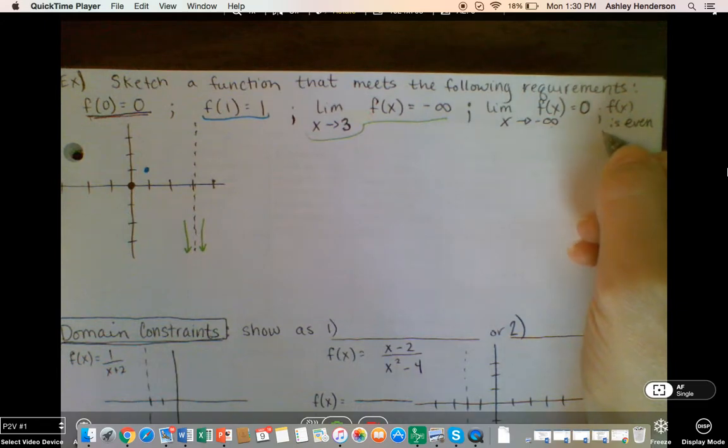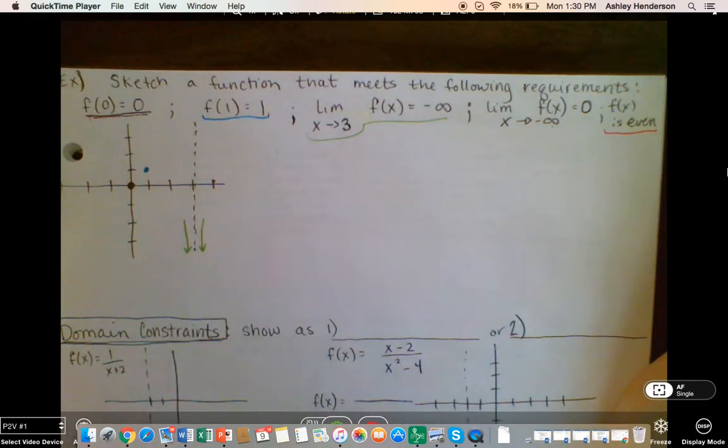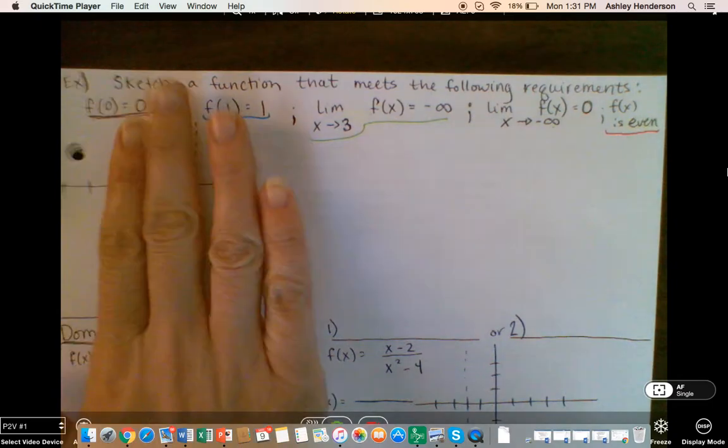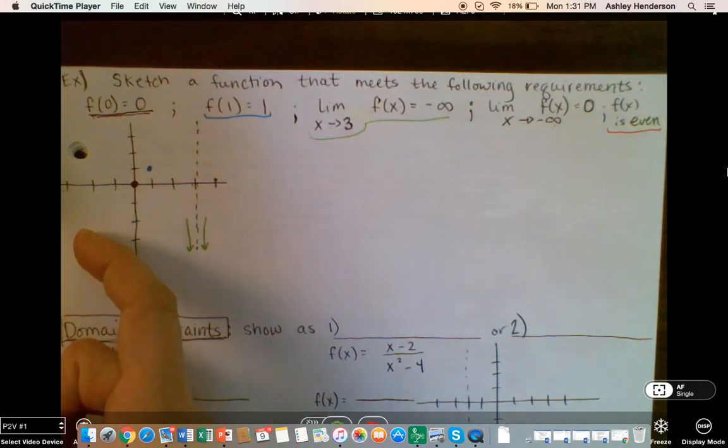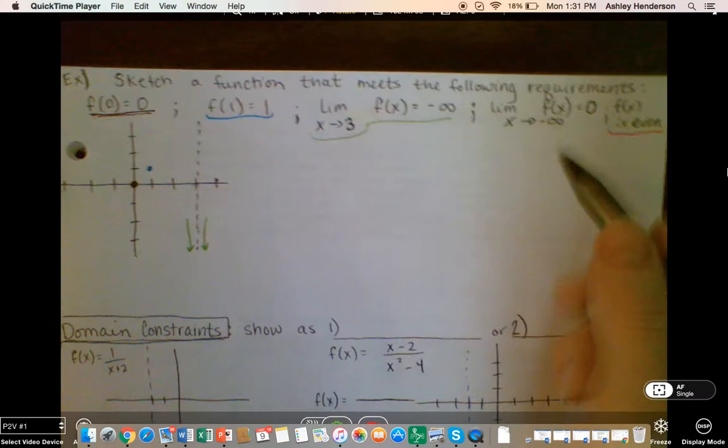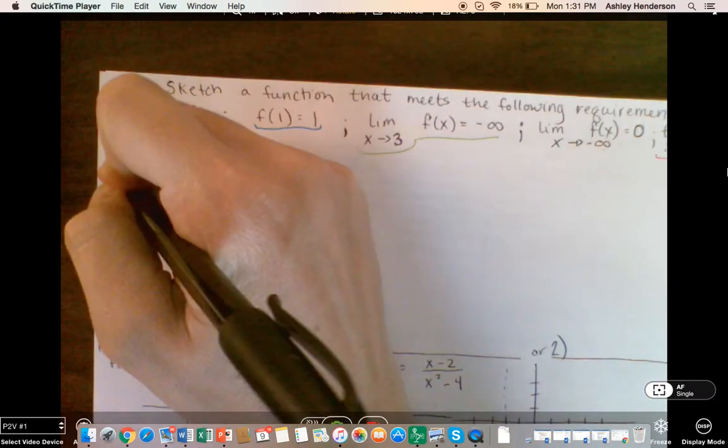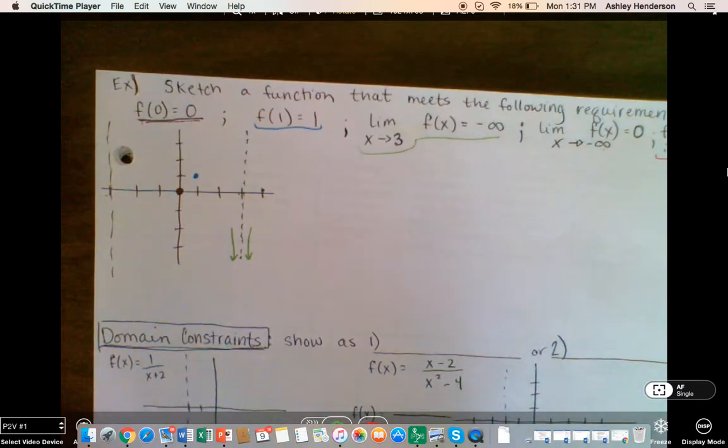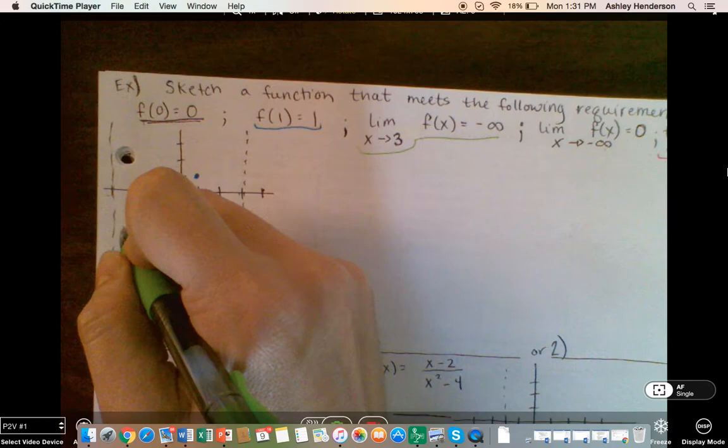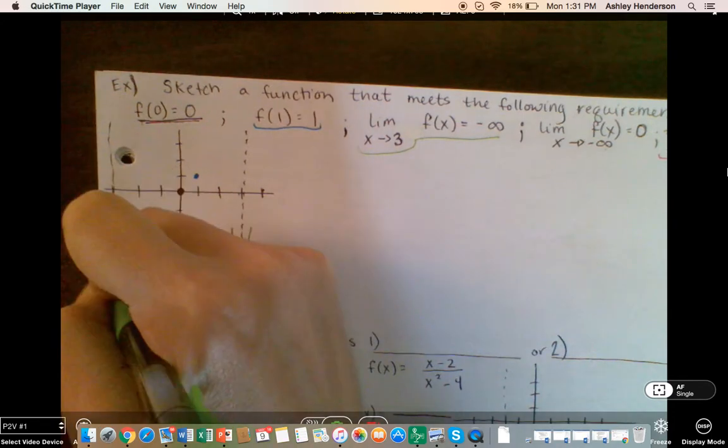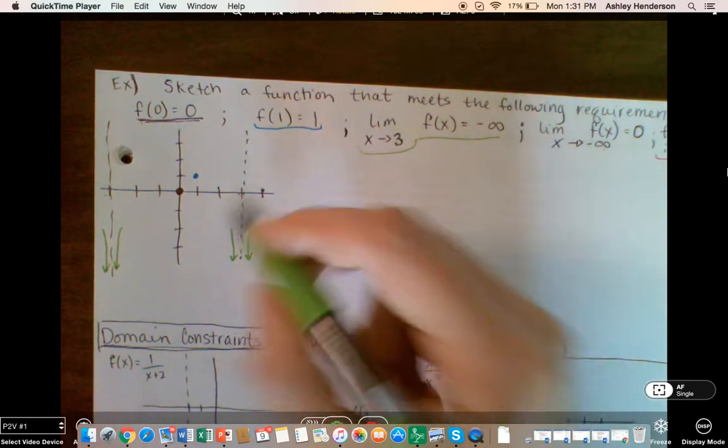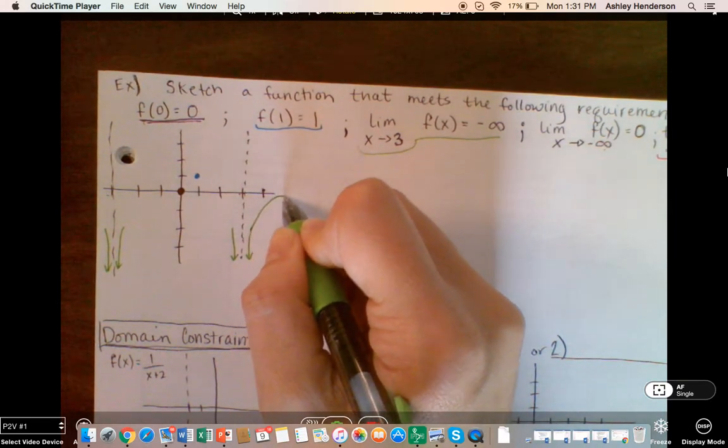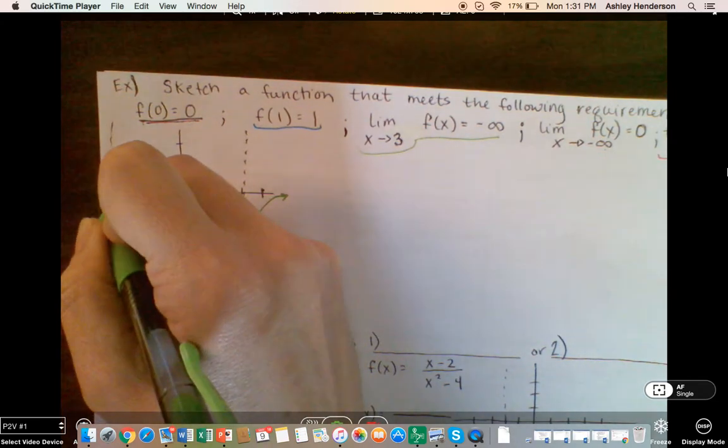And then the last one says f of x is even. So there's a terminology piece there, what is that terminology? Even means that whatever is on this side of the graph, on this side of the axis, must be mirrored to this side of the y axis. So that means in a sneaky way that there's also an asymptote here, which means that this guy has to go down and this guy has to go down. And that means that as x approaches negative infinity, it goes to 0, but that also means that x approaches positive infinity, it's going towards 0. So we're going to say this way, and we're going to do this way.